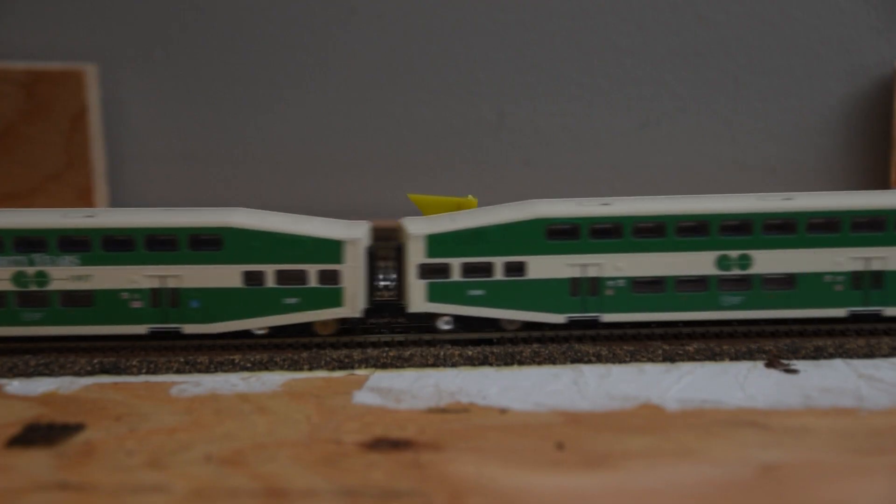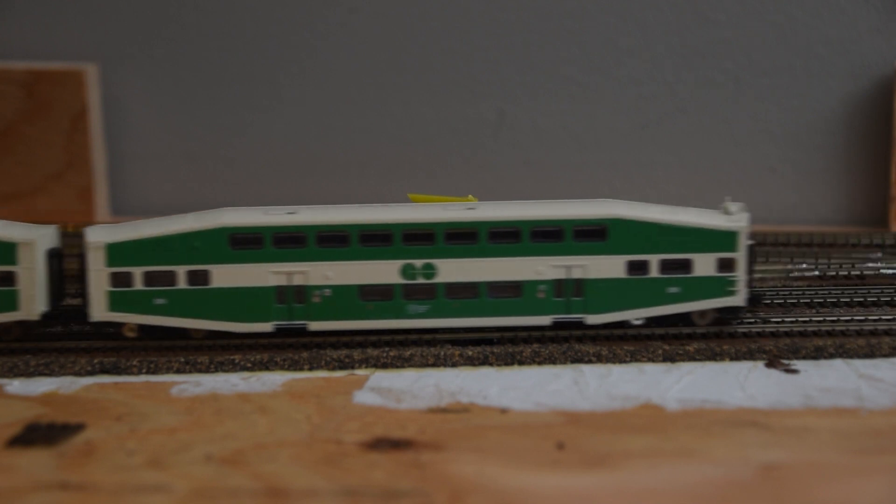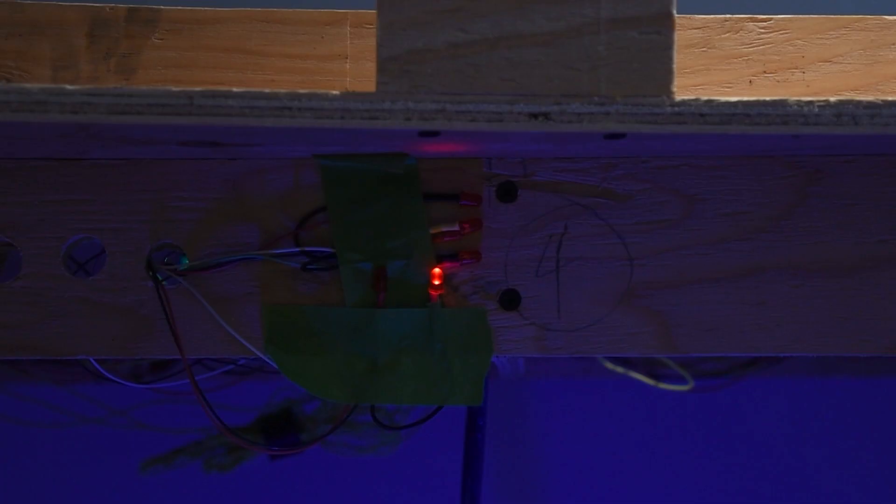Once the train leaves the siding and the second IR detector returns to an open state, the LED indicator turns off, signaling that now the siding is clear and can be occupied again by another train.